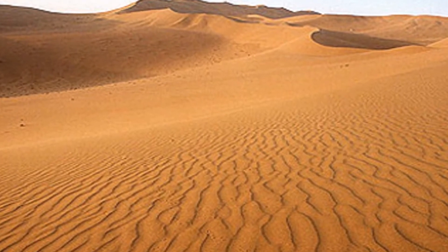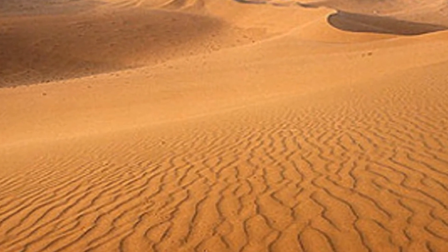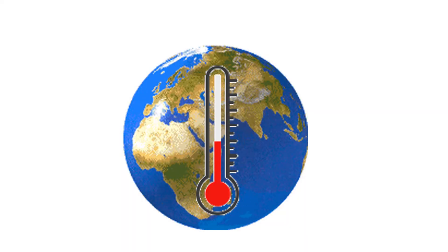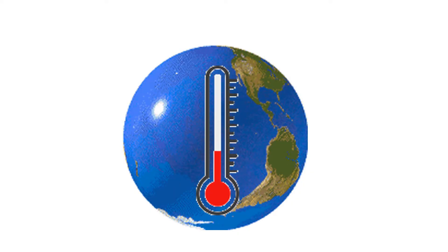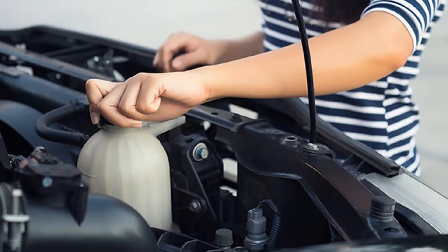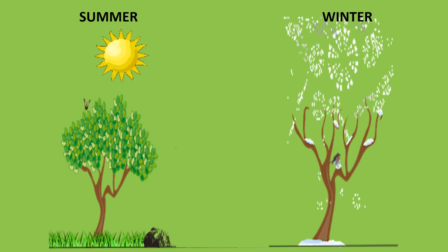Sandy deserts would spread across the planet. When the sun heats our earth, the ocean absorbs the heat and maintains the earth's temperature, just like the coolant in our car. But without oceans, the temperature difference between day and night, and between summer and winter, would be very large.